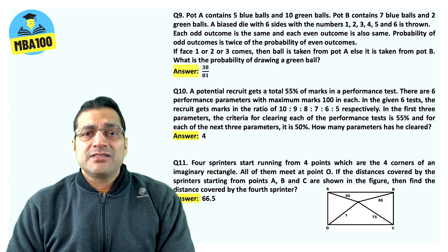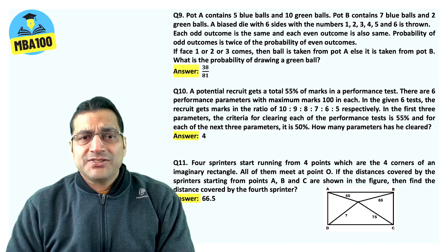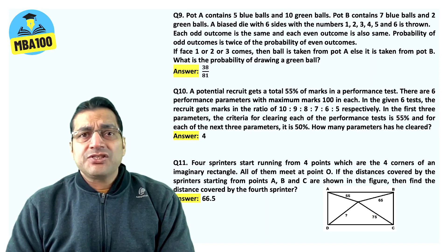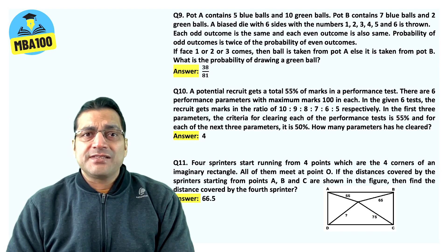Potential recruit gets a total 55% of marks. Again, age-old question. The answer is four. Four sprinters start from four points. The answer is 66.5.